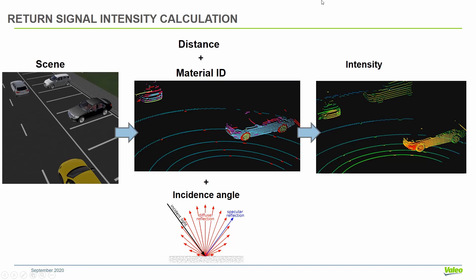First we will discuss how we can calculate the intensity of the signal from this data. Basically, in CarMaker, we have our scene. If we sample this scene with our sensor, we will get the detections. We can see this in this point cloud. We will get for each point the distance, material ID, and incidence angle. Using these three pieces of information together, we can calculate the intensity, which you can see here as different colors.